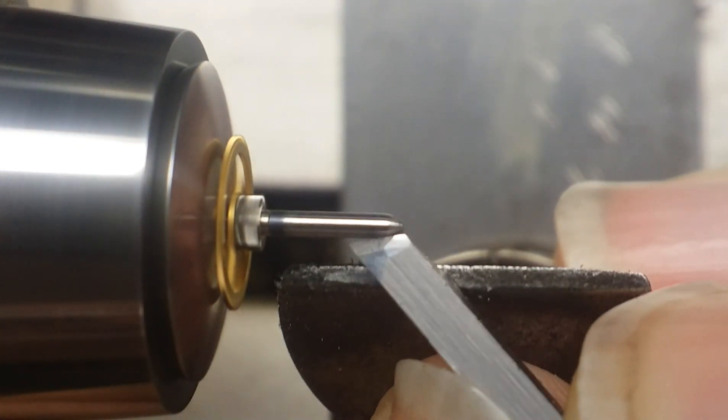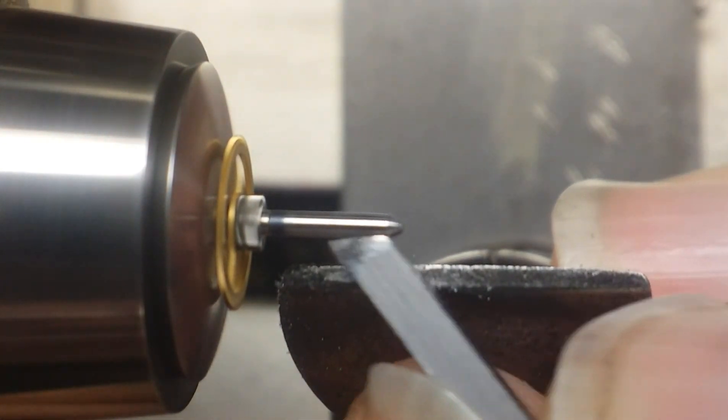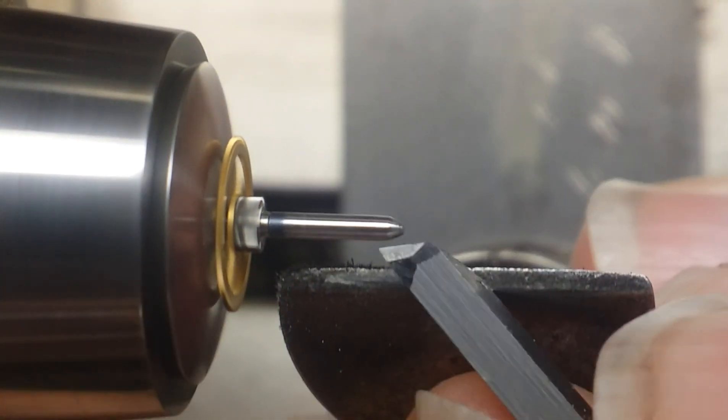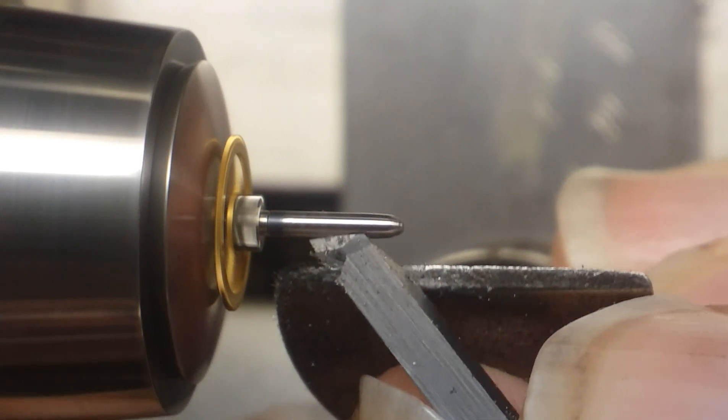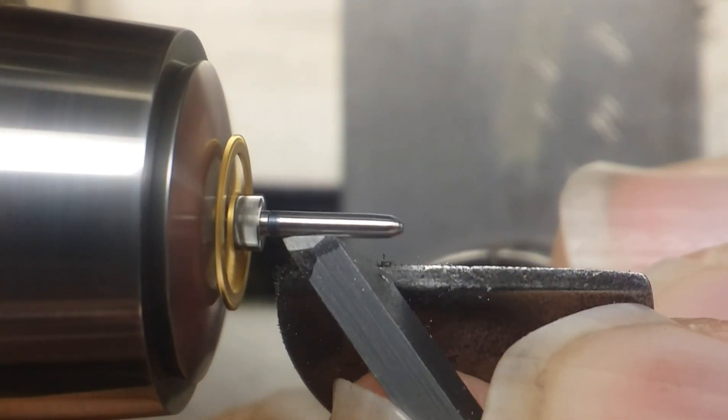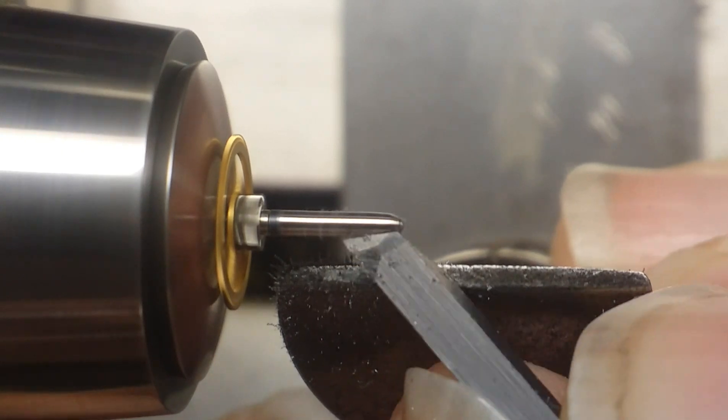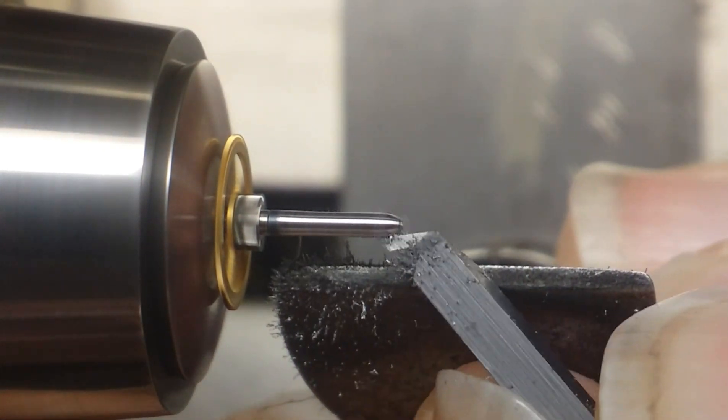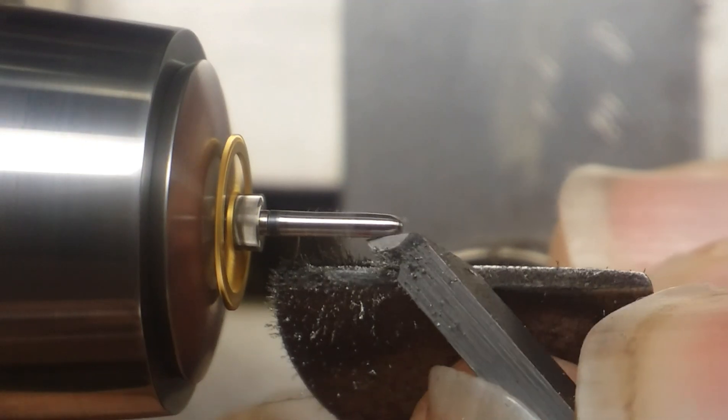Now, you can see early on here I'm taking very light cuts and getting essentially dust off of the arbor, and the reason why is because the arbor or the piece of steel is extending so far out that it has a tendency to flex.